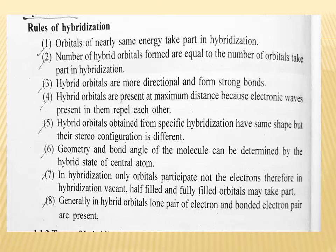Rule four — hybrid orbitals are present at maximum distance from each other because the electron waves present in them repel each other. Rule five — hybrid orbitals obtained from specific hybridization have the same shape, but their stereo configuration is different.